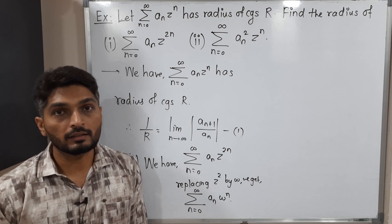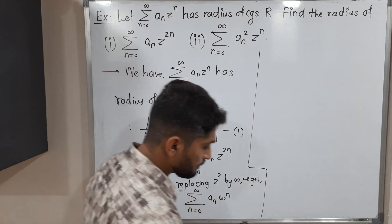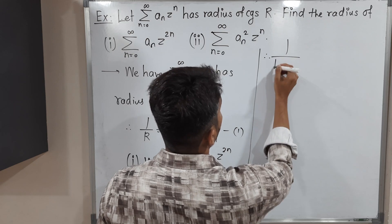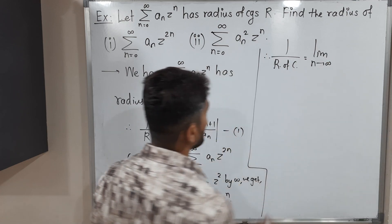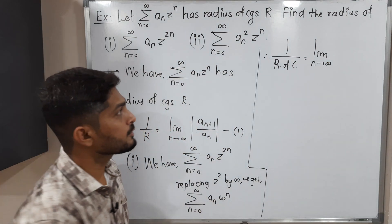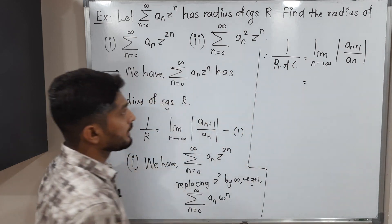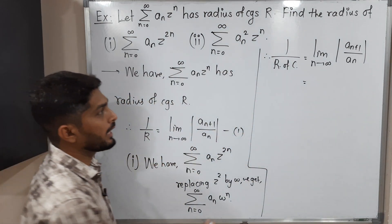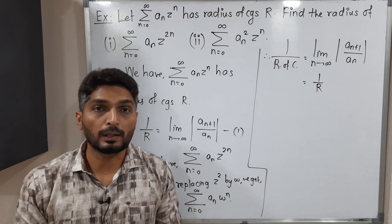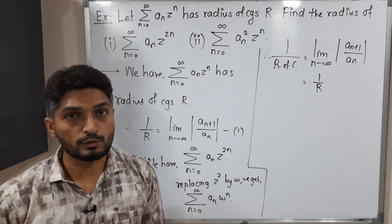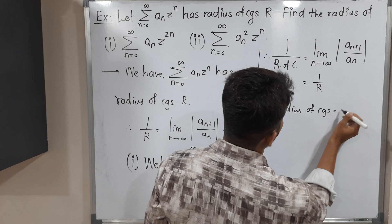Now we can apply the formula of radius of convergence. So 1 over the radius of convergence equals lim_{n→∞} |a_{n+1}/a_n|. The coefficient here is a_n, so we write |a_{n+1}/a_n|. This limit is already known from equation (1) to equal 1/r. Therefore, 1 over the radius of convergence equals 1/r, and taking reciprocals, the radius of convergence equals r.